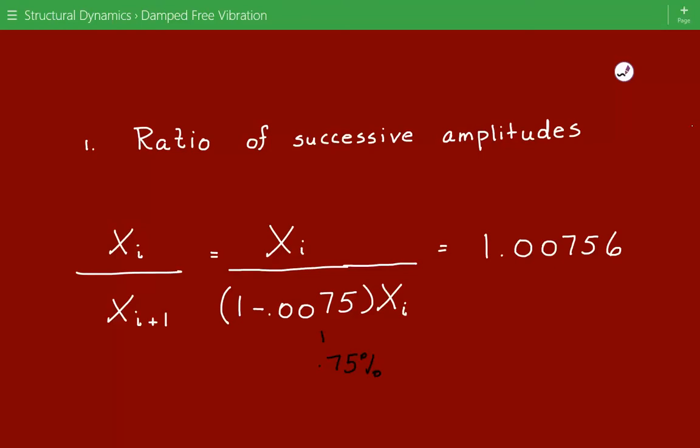To get it into decimal format, it's 0.0075. So 1 minus 0.0075 times Xi. And so this ratio is equal to 1.00756. This is our ratio of successive amplitudes.